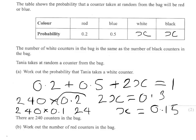Since 0.2 is twice as much as 0.1, we double 24 to get 48 red counters altogether.